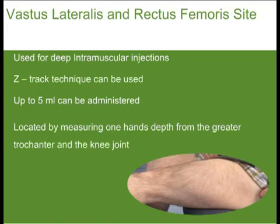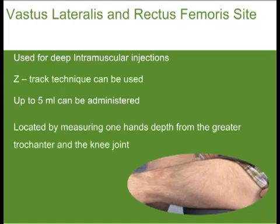The vastus lateralis and rectus femoris site can be used for deep intramuscular injections of up to 5 mLs. It is recommended that the Z-Track technique is used when injecting this site. It is located between one hand's depth from the greater trochanter and one hand's depth from the knee joint.